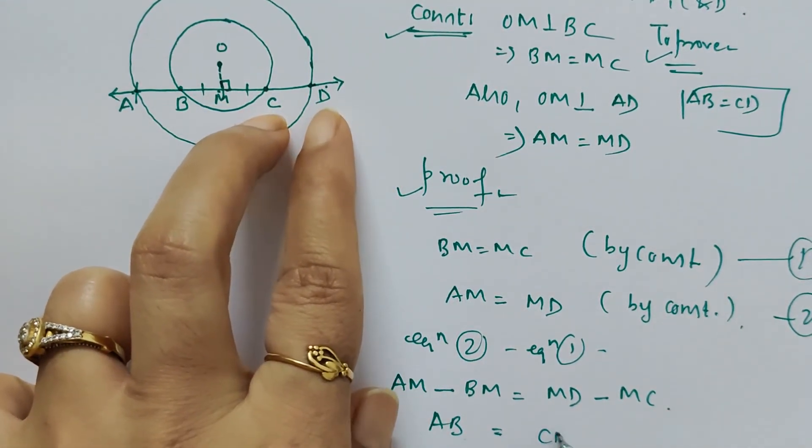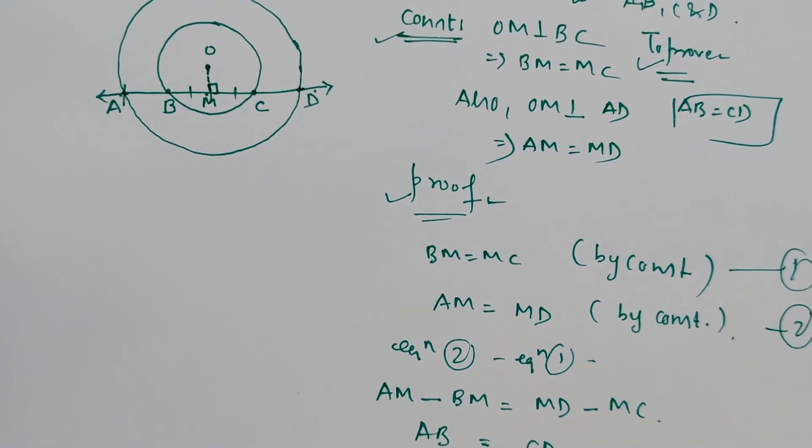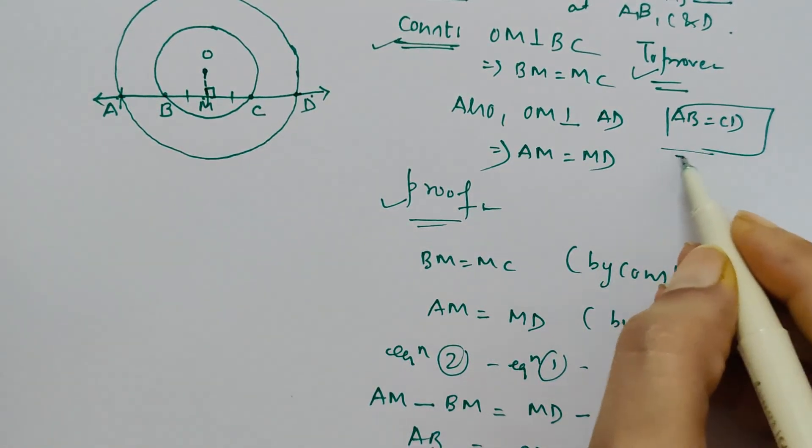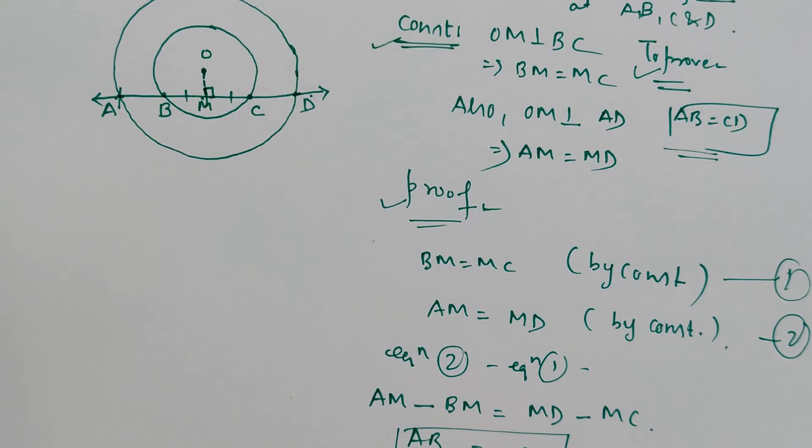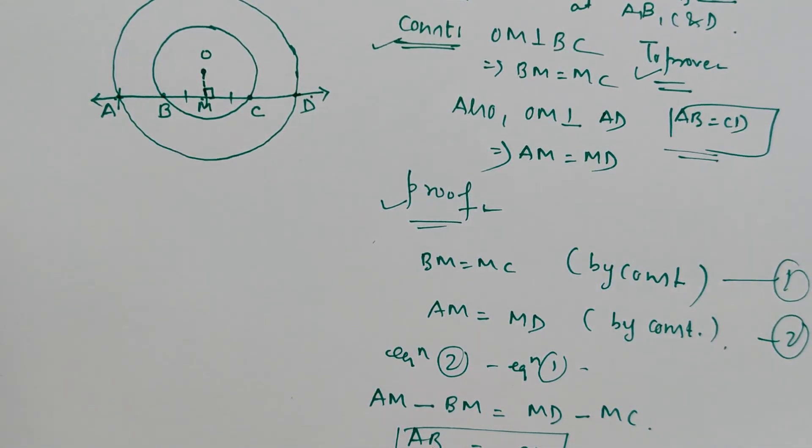This is what we had to prove: AB equals CD. Hence proved. The construction part was the crux of the problem, with which we proved the equation. Thank you.